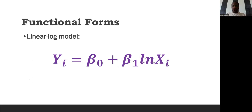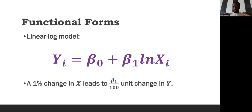In the linear-log model, the dependent variable is in its linear form, but the natural logarithm is applied to the independent variable. The coefficient of X is already in percentage, but we convert it to units to suit the linear dependent variable by dividing by 100. So a 1% change in X leads to beta 1 divided by 100 unit change in Y.